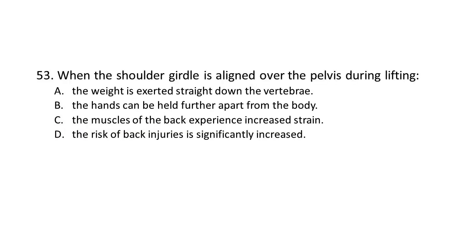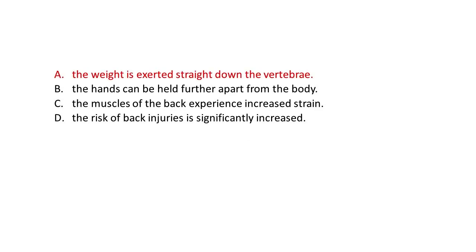Question 53. When the shoulder girdle is aligned over the pelvis during lifting: A) The weight is exerted straight down the vertebrae. B) The hands can be held further apart from the body. C) The muscles of the back experience increased strain. D) The risk of back injuries is significantly increased. The answer is A: The weight is exerted straight down the vertebrae.